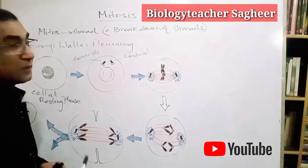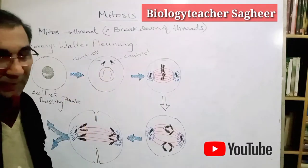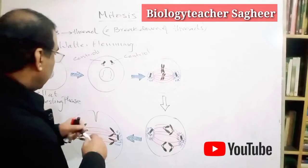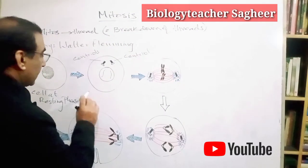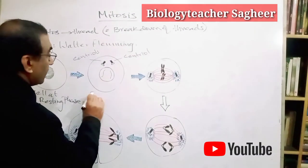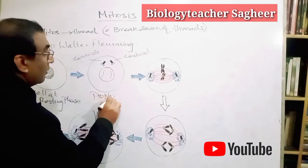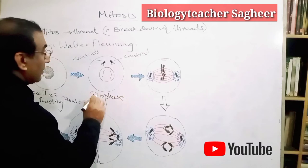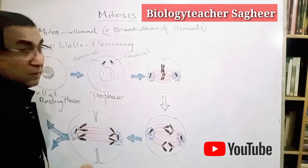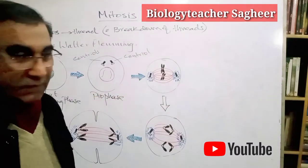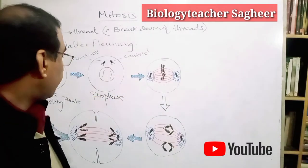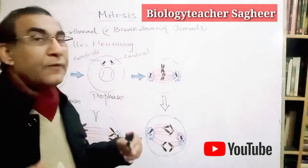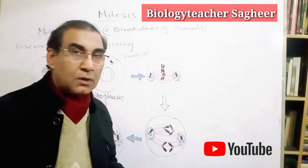Here is a pair of centrioles — these are rod-like structures. This stage is known as prophase. 'Pro' means before and 'phase' means stage, so this is the first stage of mitotic division.